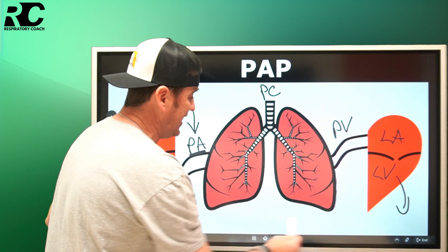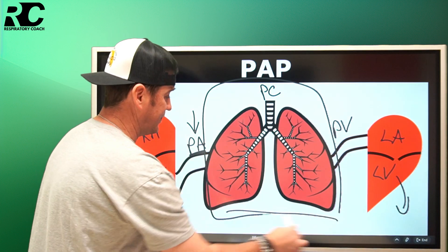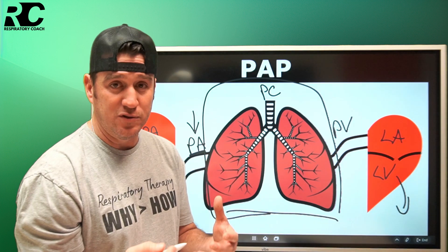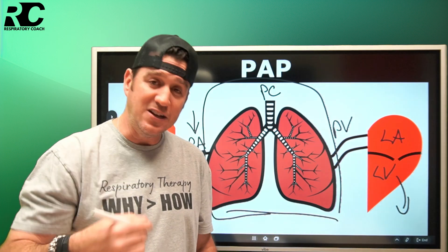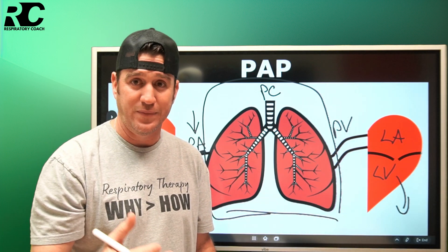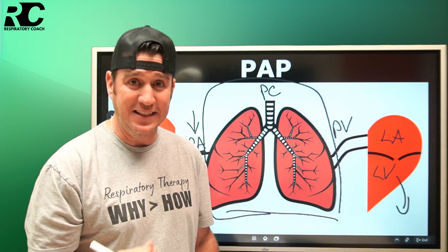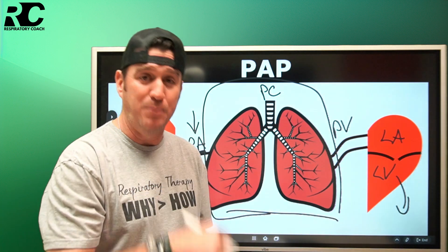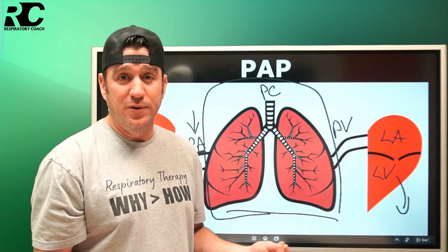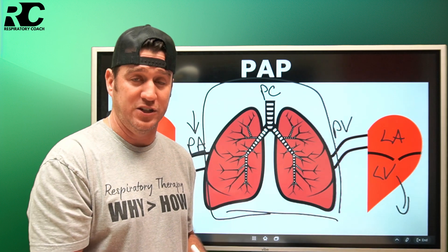When we talk about pulmonary artery pressure, the key concept is: what could happen in this area to cause the vessels to increase their resistance to blood flow? Essentially, anything that causes an increase in pulmonary vascular resistance can yield an increase in your pulmonary artery pressure.